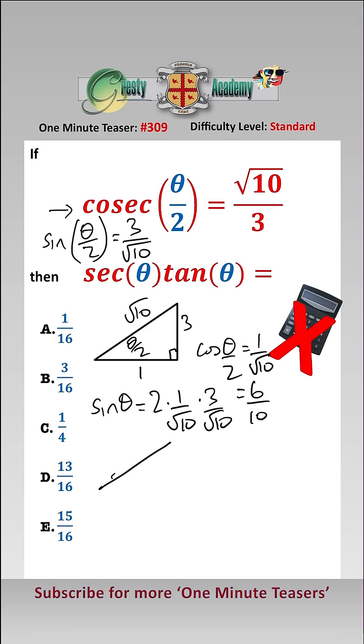Now we can draw another little triangle here, and we can put the theta in here, so that would be 6 and that would be 10, so by Pythagoras this will be 8. Now all we need to do is read them off.